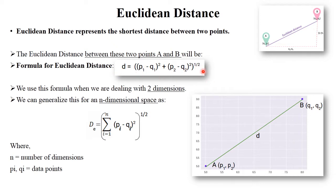These points are already given and you need to find the shortest distance between point A and point B. The formula used is: square root of (P1 minus Q1) squared plus (P2 minus Q2) squared — that is, the whole raised to 1/2. This formula generally deals with two-dimensional space, and for n-dimensional space you can generalize this formula using summations.